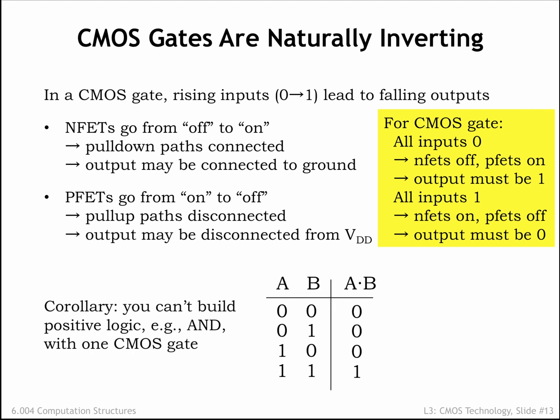This means that so-called positive logic can't be implemented with a single CMOS gate. Look at this truth table for the AND function — its value when both inputs are 0, or both inputs are 1, is inconsistent with our deductions about CMOS gate outputs for these input combinations. Furthermore, when A is 1 and B rises from 0 to 1, the output rises instead of falls. Moral of the story: when you're a CMOS designer, you'll get very good at implementing functionality with inverting logic.